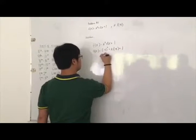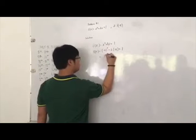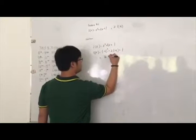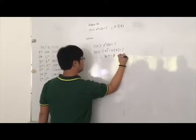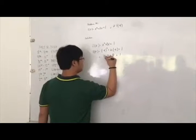So negative 4 raised to 2 is equal to 16, plus 2 times negative 4 is negative 8, plus 1. After which we now combine like terms.